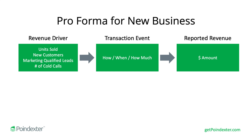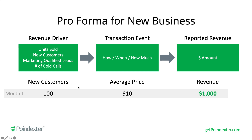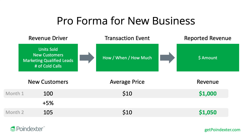To make this more straightforward, here's a quick example. We'll forecast 100 new customers in the first month, with an average price of $10. Multiplying those together gives us revenue of $1,000. When forecasting future months, we again focus on the revenue driver because that's what we have control over. We increase the revenue driver by a certain percentage of growth and then arrive at revenue based on that growth — the exact opposite approach from existing businesses, but generally how most investors suggest you approach this.